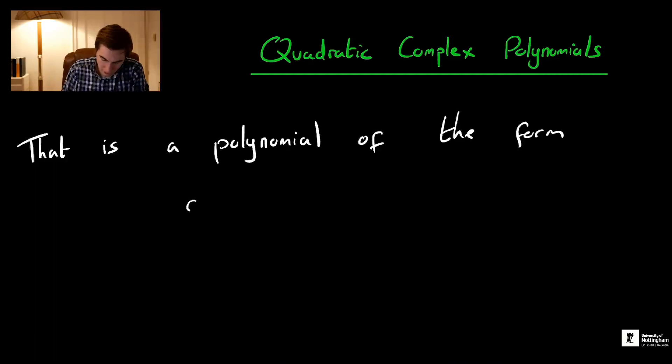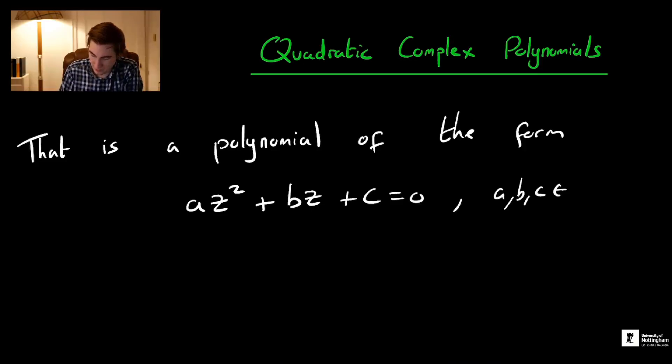So that is a polynomial of the form az² + bz + c = 0, where a, b, and c are in ℂ now, not necessarily ℝ.